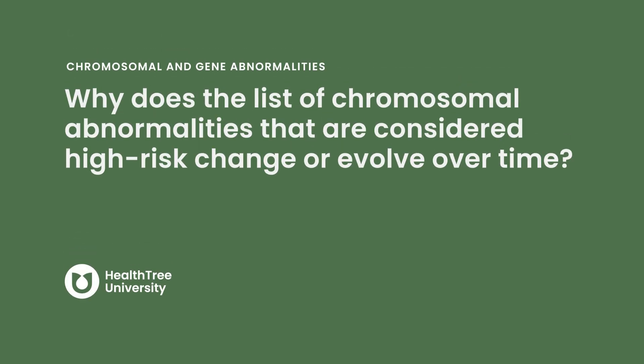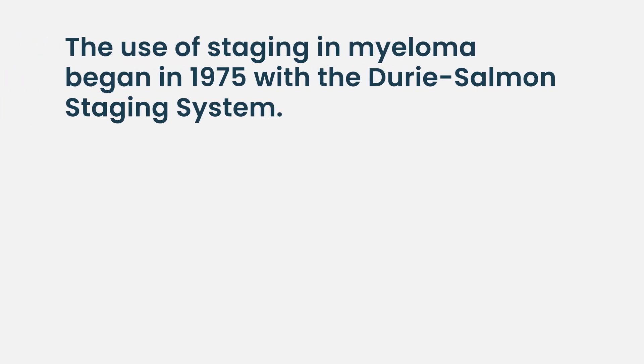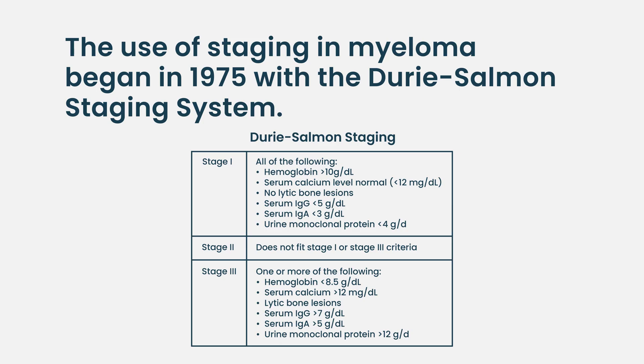Why does the list of chromosomal abnormalities considered high-risk change or evolve over time? Our definition of what high-risk is has evolved over time. Way back when, we used to look at mostly patient factors, and it was really based on how aggressively the disease was already behaving at the time of diagnosis, because most patients 30 to 40 years ago weren't diagnosed in an asymptomatic state — they were already diagnosed when they had symptoms.